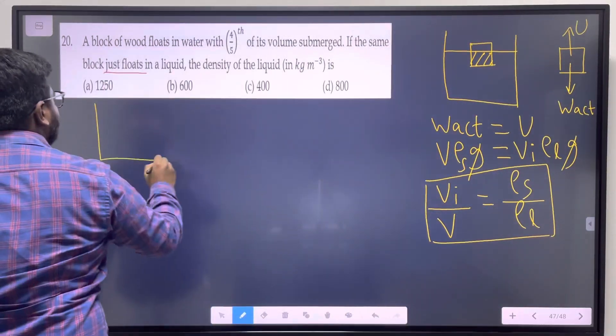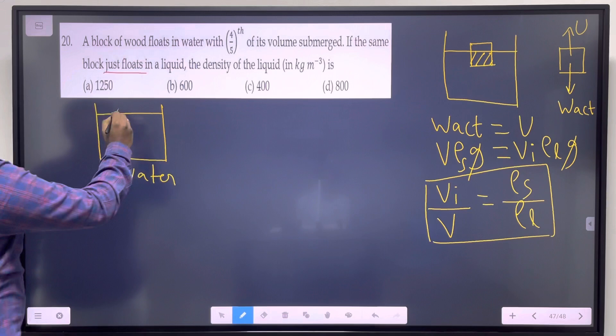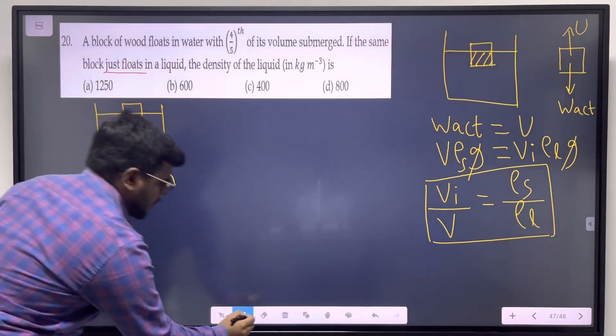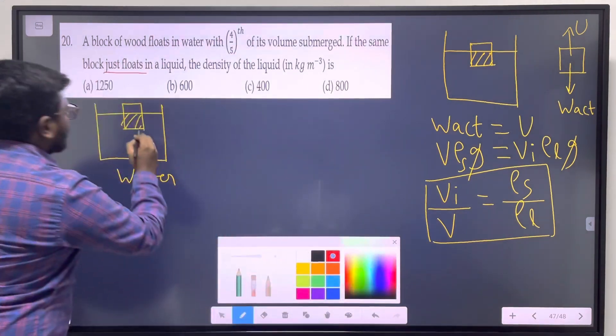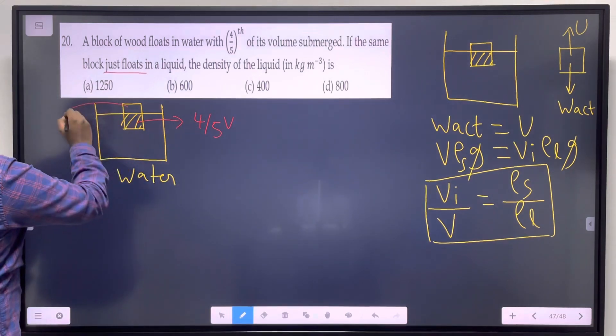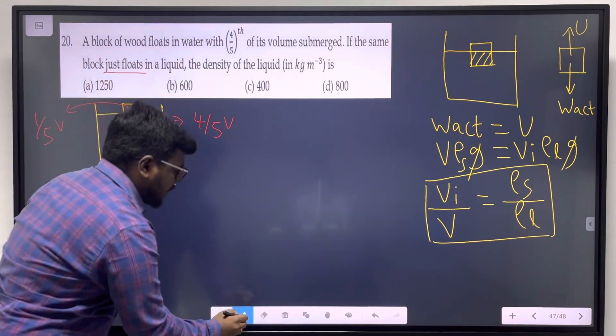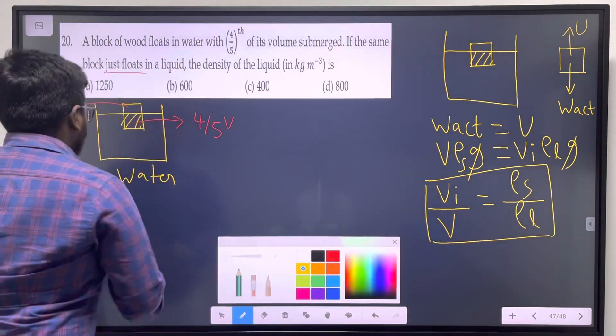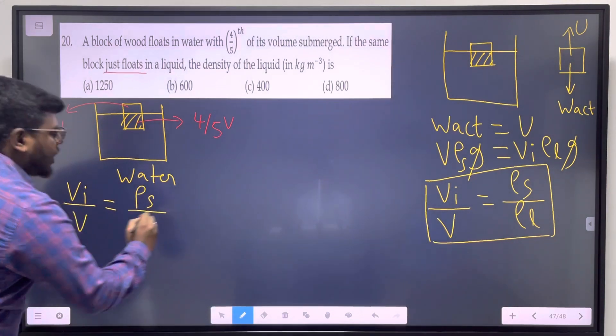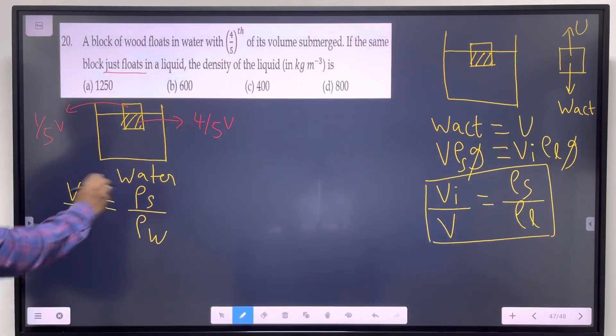Let's solve this problem. For water, the solid has 4/5 V immersed, with 1/5 V above water. Using the formula V_i/V = ρ_s/ρ_w, where ρ_w is the density of water.